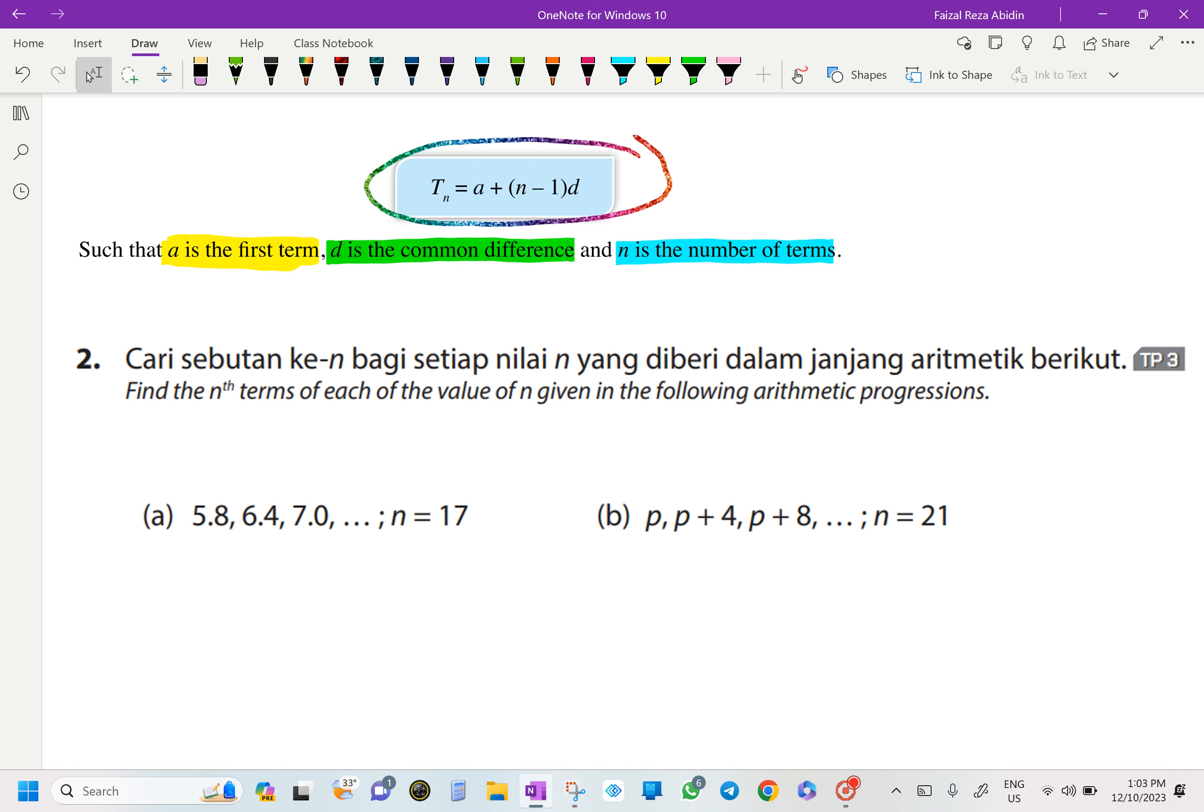We already know about our difference, how to find our difference of our terms. So if you look over here, A is going to be our first term. N is going to be the number of terms that we are going to find, and D here is going to be our common difference.